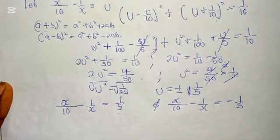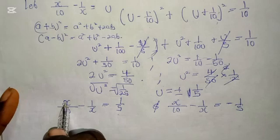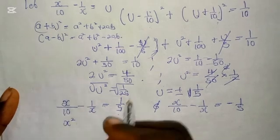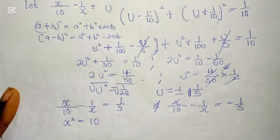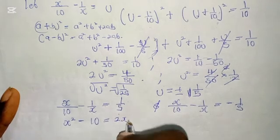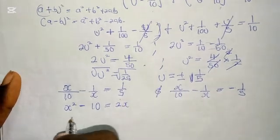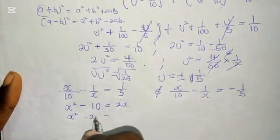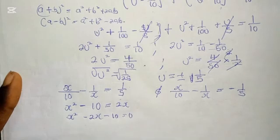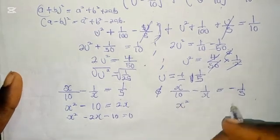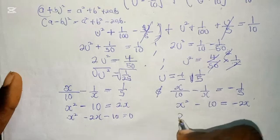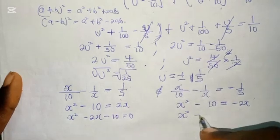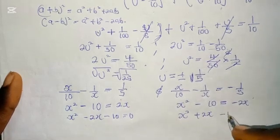The LCM here is 10x. Multiplying through by 10x for the first equation gives x squared minus 2x minus 10 equals 0. If you do the same for the second equation, you are going to have x squared plus 2x minus 10 equals 0. The only difference is the middle sign.